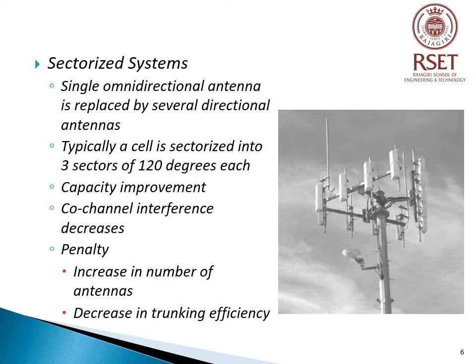As the demand for wireless service grew even higher, the number of frequencies assigned to a cell became insufficient to support the required number of subscribers. A technique called cell sectoring was introduced, in which a single omnidirectional antenna at the base station is replaced with several directional antennas. Typically, a cell is sectorized into three sectors of 120 degrees each. By reducing the number of cells in a cluster and increasing frequency reuse, capacity improvement is achieved and co-channel interference decreases. The penalties are an increase in the number of antennas at the base station and a decrease in trunking efficiency.